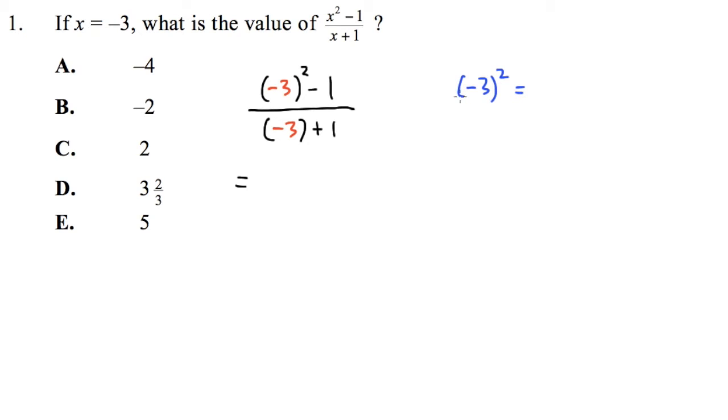This right here, we see that we have a parenthesis to the second power. The exponent tells us to write down whatever we have 2 times, and then multiply. So this is the same as parenthesis negative 3 times another parenthesis negative 3, and then we see that negative 3 times negative 3 gives us positive 9.